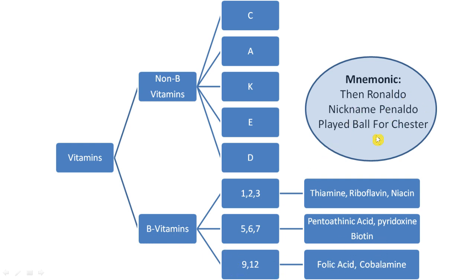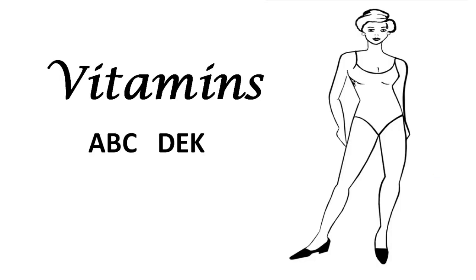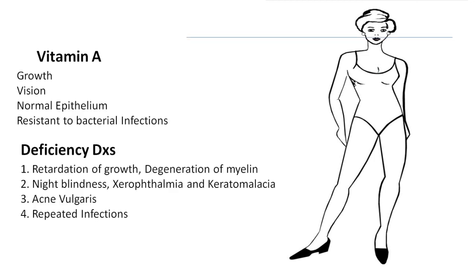Now we will cover the functions and deficiency of each vitamin using a trick: apply the vitamin to the human body. You think about your own body and remember all the functions. We will go in sequence — A, B, C, D, E, K — starting from the top and going down.